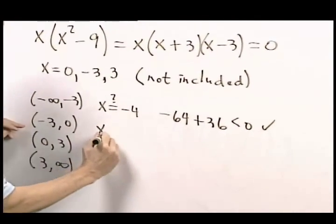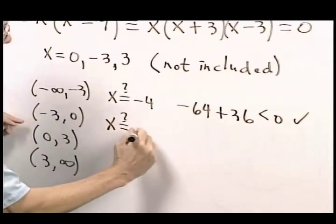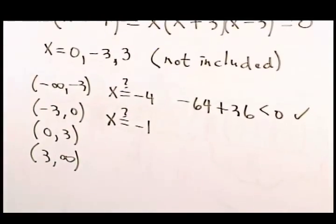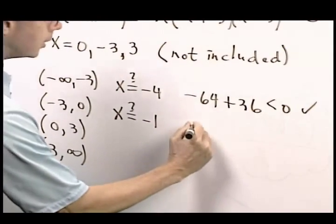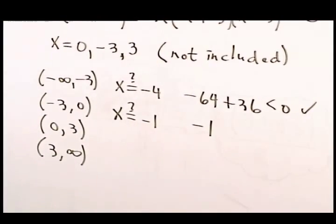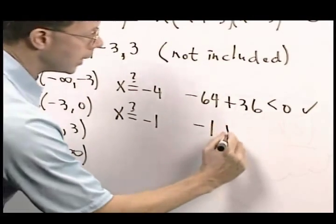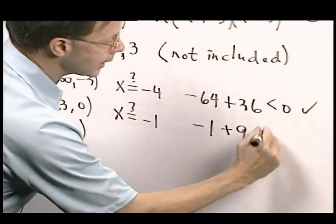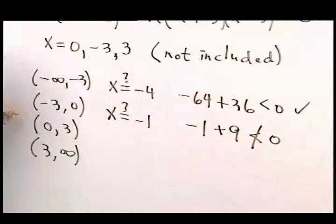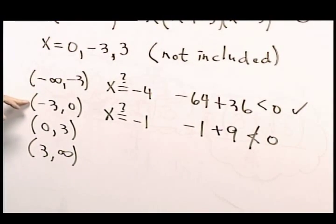Let's try another interval. Try this one. See, x equals negative 1. That's in there. And when I substitute it in, I get negative 1. Negative 1 cubed is negative 1. Minus 9 times negative 1 is plus 9. That is not less than 0. So this interval is not part of the solution.